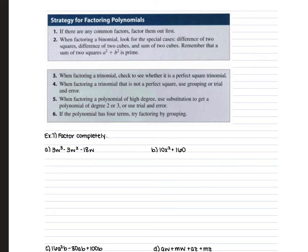For the next set of examples, we factor completely. First, ask if there is a greatest common factor to pull out. If so, do that. If A equals 1, find factors of C that add up to B. If A is not 1, check for a perfect square trinomial, difference of squares, or multiply A and C to find factors that add up to B and factor by grouping. Also keep in mind factoring by grouping and sum and difference of cubes.